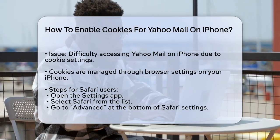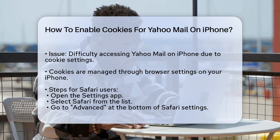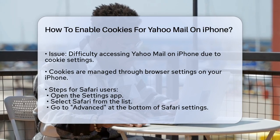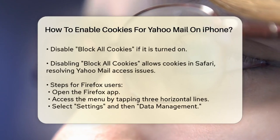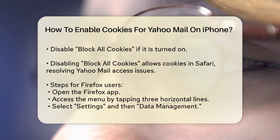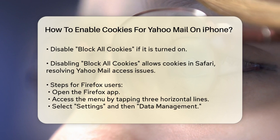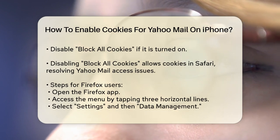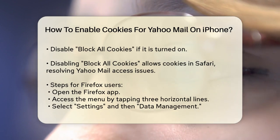For Safari users, here's what you need to do. Open the Settings app on your iPhone. Scroll down and select the Safari option. Go all the way to the bottom of the Safari settings and select Advanced. Look for the option that says Block All Cookies and make sure it is turned off. If it's on, tap the button to the right of it to disable it. By turning off Block All Cookies, you're allowing cookies to be enabled in Safari, which should resolve the issue with Yahoo Mail.